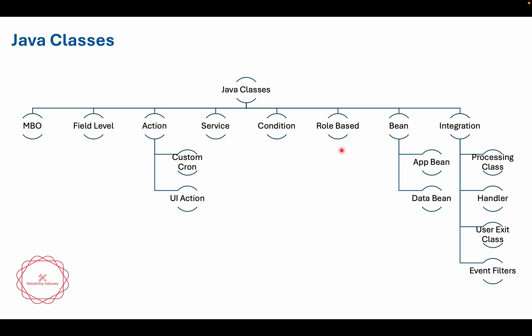We will see how role-based classes work in Maximo automation scripts. The other type is bean classes, which are very important because these are the UI classes. They are categorized into two portions: app bean and data bean. Many of the methods for UI functionality you see on the Maximo UI are available in app bean classes, and if you are working with dialogs, data bean comes into the picture.